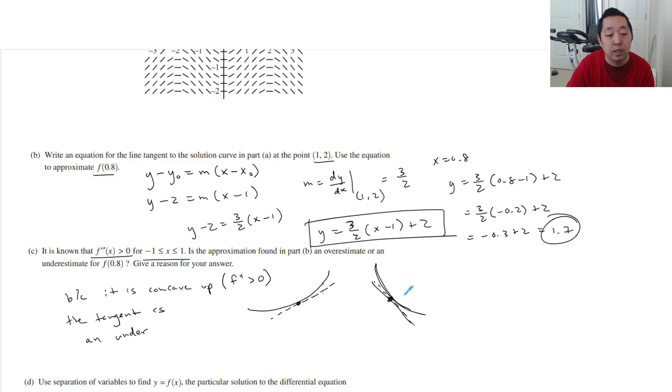The tangent line is an underestimate. Well, let me see. We're going to the, yeah, it's always an underestimate. The tangent line's always underneath the curve, underestimate. You can see in both of those scenarios. If it's concave up, the tangent line is always underneath the curve, which means the y value is always going to underestimate the value there.